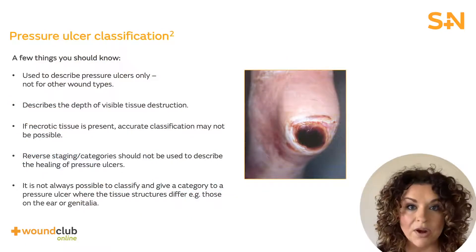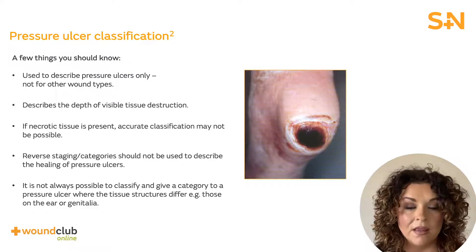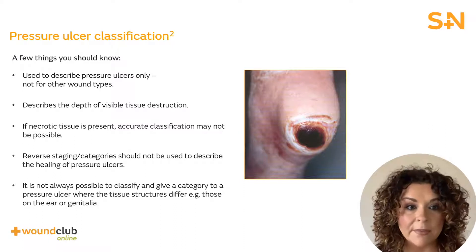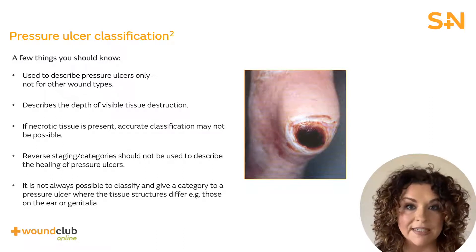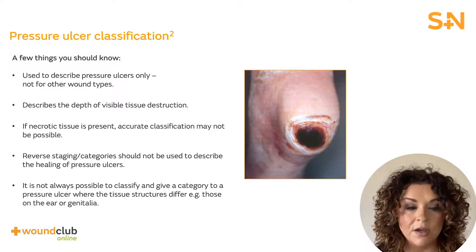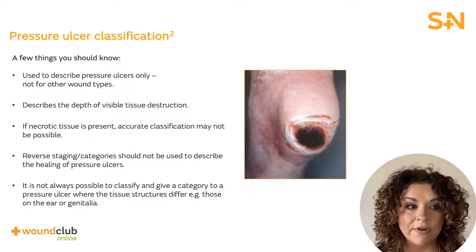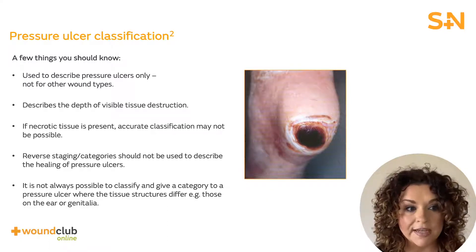Let's go through the pressure ulcer classification system. The pressure ulcer classification system was developed specifically for pressure injuries and describes the depth of tissue damage visible. Therefore, pressure ulcers that are completely covered with necrotic or non-viable tissue would be classified as unstageable. Reverse staging should not be used to describe healing pressure ulcers or injuries. The body is unable to regenerate certain tissues such as fat, fascia and muscle. Therefore, reverse staging is inaccurate when used as a parameter for wound healing.